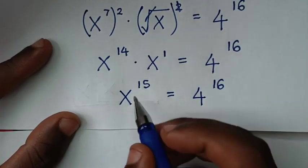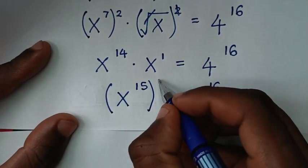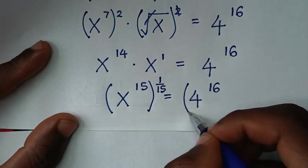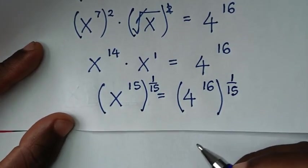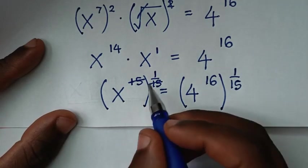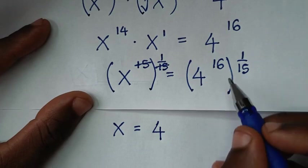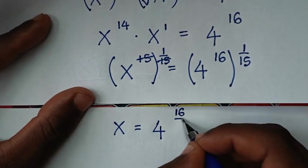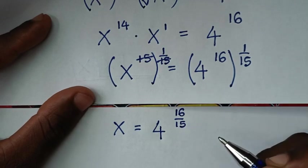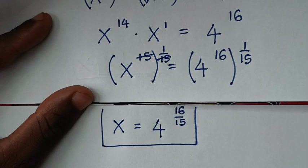To get the value of x, we'll raise both sides to the reciprocal power, which is power of 1 over 15. This and this will cancel to give x to the power of 1, which is x is equal to 4 to the power of 16 times 1 over 15, which is power of 16 over 15. Therefore, this is the final answer for the value of x in our problem: 4 to the power of 16 over 15.